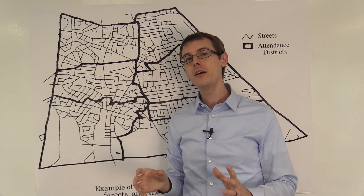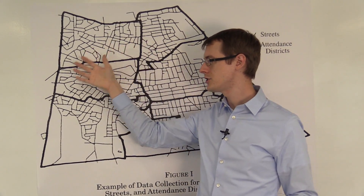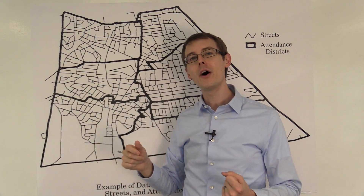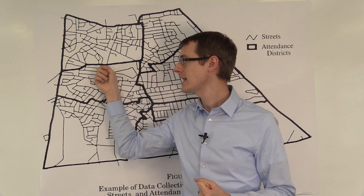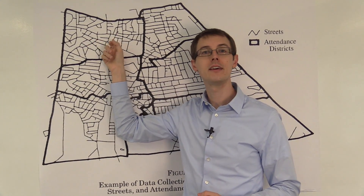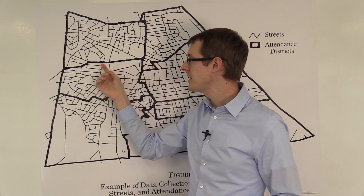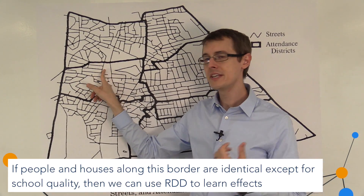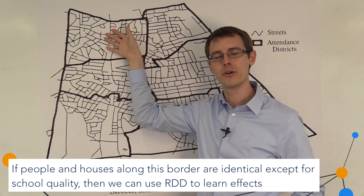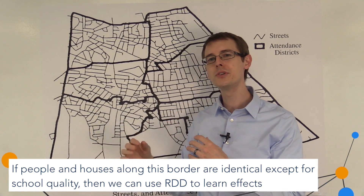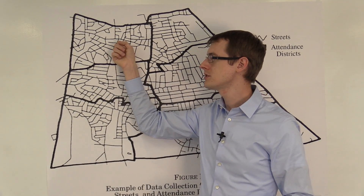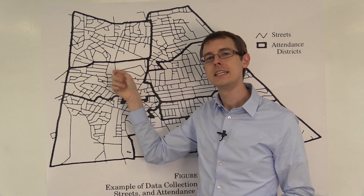What we can do is combine this geographic information system data — these maps — with outcome data on house prices. We look at the average prices of houses on this side of the border and compare them to the average prices of houses on that side. Any difference in those average prices is solely attributed to the fact that school quality — test scores — is higher on one side than the other.